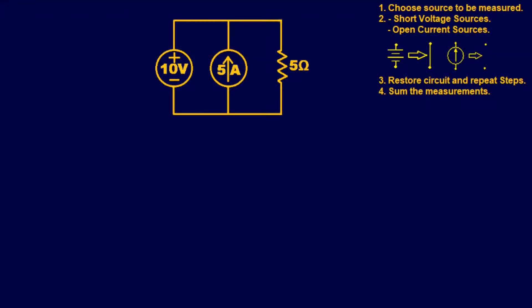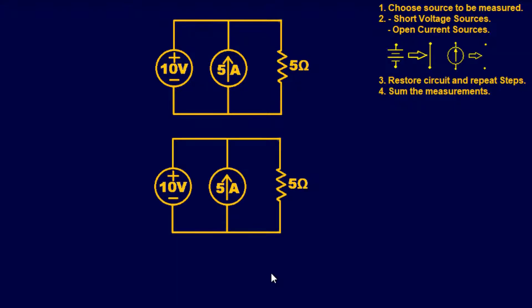For our first example we'll start with a relatively easy one containing one voltage source, one current source, and one resistor — just to go over the steps. We're trying to find the total current flowing through the 5-ohm resistor. Step one: choose the source to be measured. I'm going to choose the 10-volt power supply first.